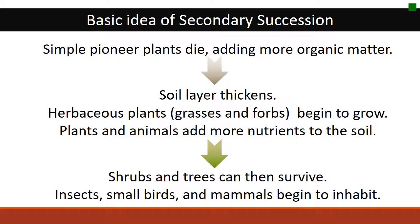Some basic ideas to sum up: we're always going from simple plant communities to really advanced ones. Simple plants die and add organic matter — they're the pioneers in marginal situations. As time goes on, the soil layer thickens; herbaceous plants like grasses and forbs begin to grow. Plants and animals add nutrients to the soil, and food webs start to get more complex. More long-lived plants such as shrubs and trees start to move in because the earlier stages have changed the site. Then we see really complex food webs involving insects, small birds, reptiles, and mammals, all inhabiting and interacting on the site.